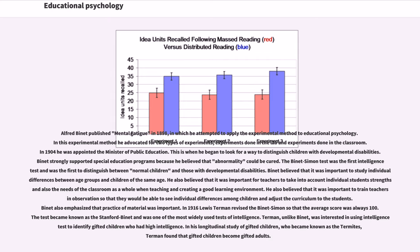In 1916, Lewis Terman revised the Binet-Simon so that the average score was always 100. The test became known as the Stanford-Binet and was one of the most widely used tests of intelligence. Unlike Binet, Terman was interested in using intelligence tests to identify gifted children with high intelligence. In his longitudinal study of gifted children, who became known as the Termites, Terman found that gifted children become gifted adults.